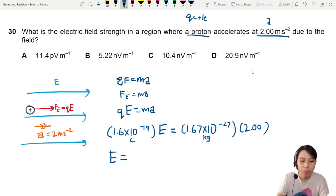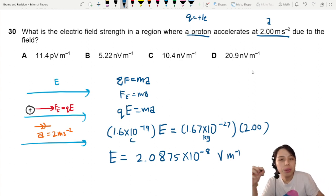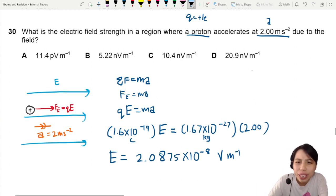We should get about 2.0875 times 10 to the negative 8 volts per meter. We need to find what are these units? They use a weird unit.